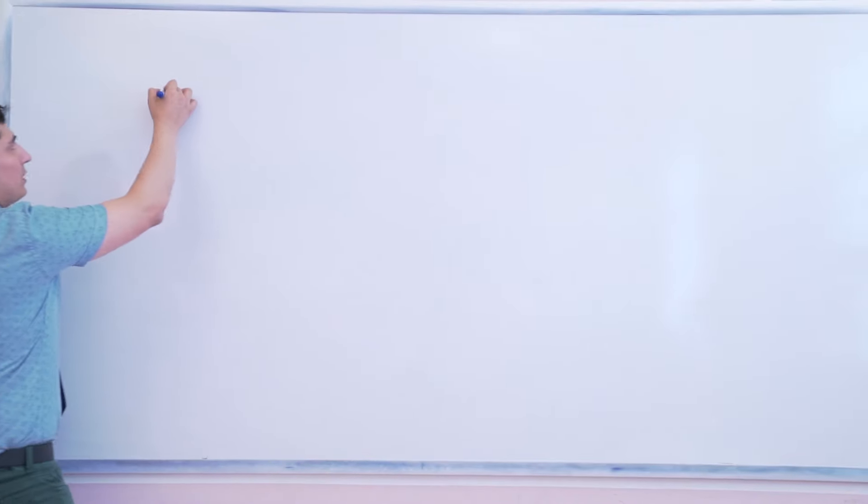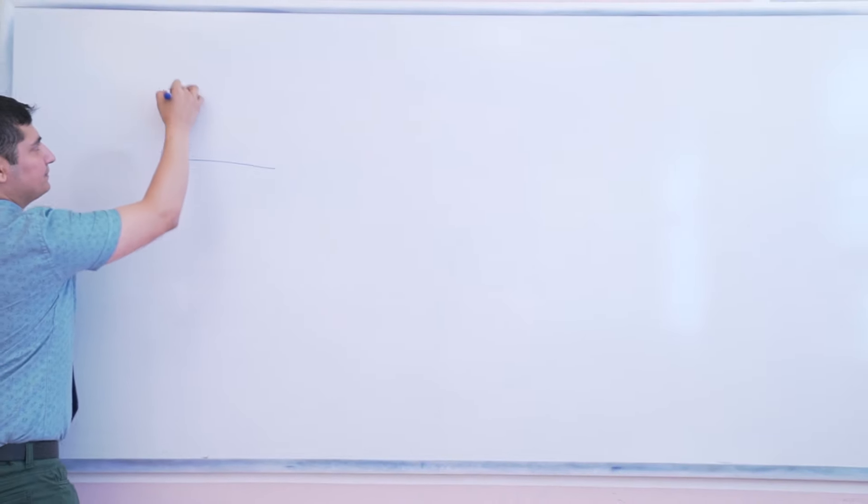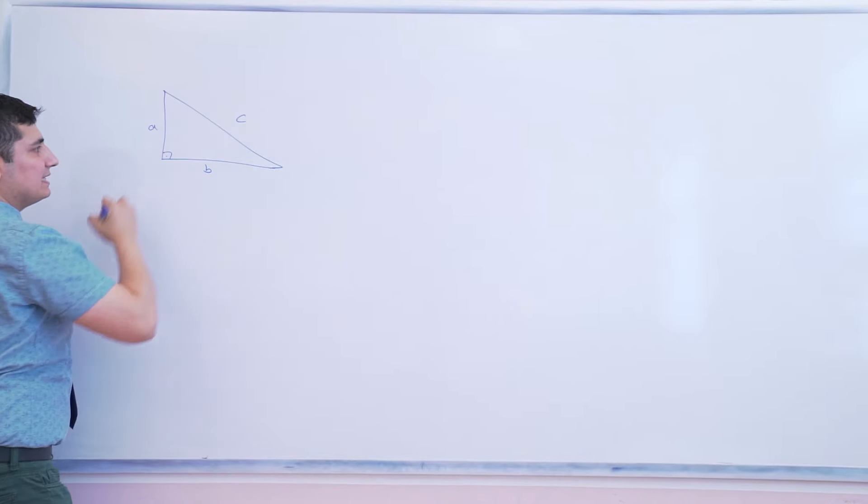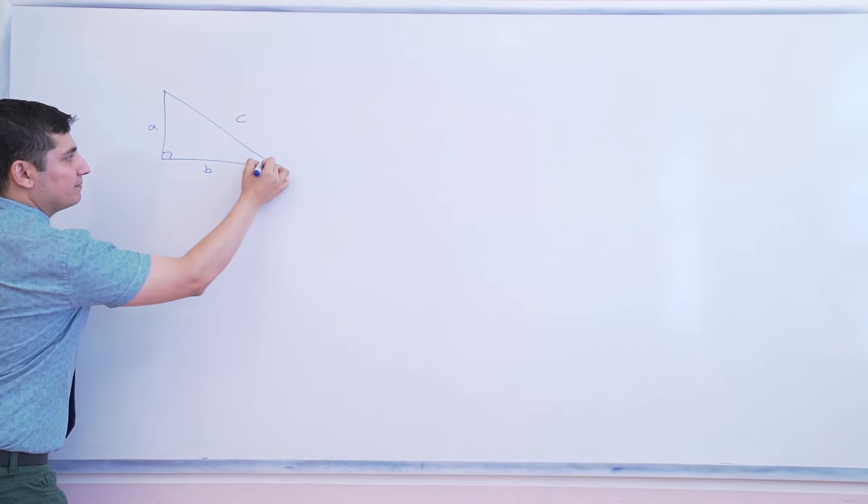We'll just prove that by using the Pythagorean theorem and that's all. Look guys, we have the right triangle with the sides of A, B and C and we have the angle alpha.